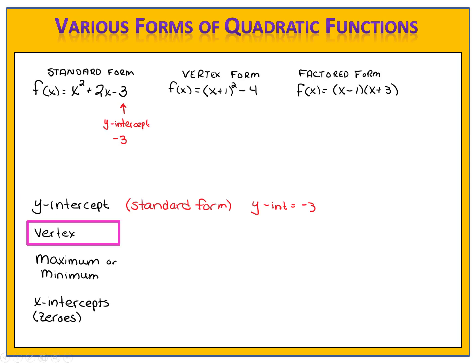Now which form would you choose to find the coordinates of the vertex? If you said vertex form, you're absolutely correct. The vertex form tells us the shift of the parabola from the origin. This parabola went left 1 and down 4, which allows us to know the coordinates of the vertex. The vertex is at the point (-1, -4). So when we want to find the coordinates of the vertex, the vertex form is the easiest way to go, because that tells us where the vertex is located.